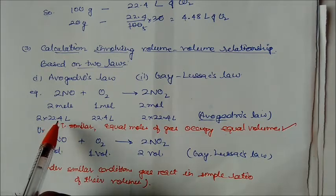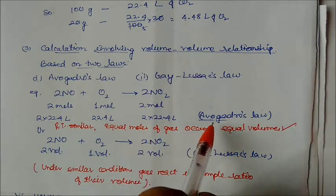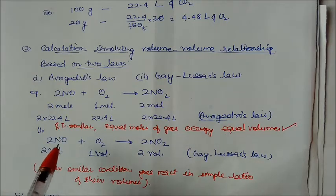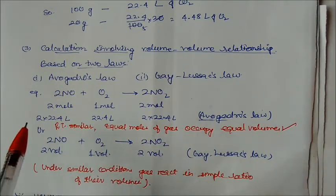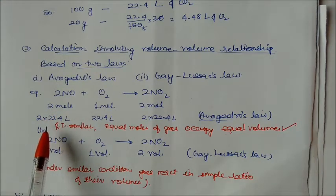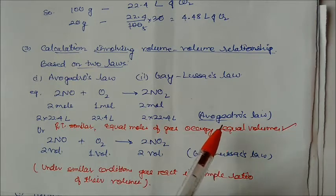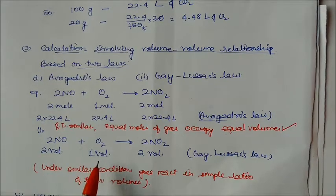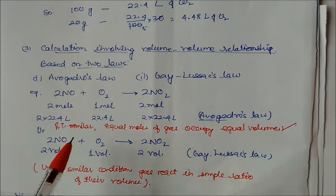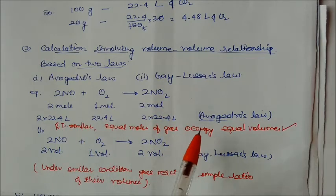Avogadro's law states that under similar temperature and pressure, equal moles of gas occupy equal volumes — moles are proportional to volume. Gay-Lussac's law states that 2 volumes of nitric oxide react with 1 volume of oxygen to give 2 volumes of nitrogen dioxide under similar conditions — a simple ratio in terms of volume.